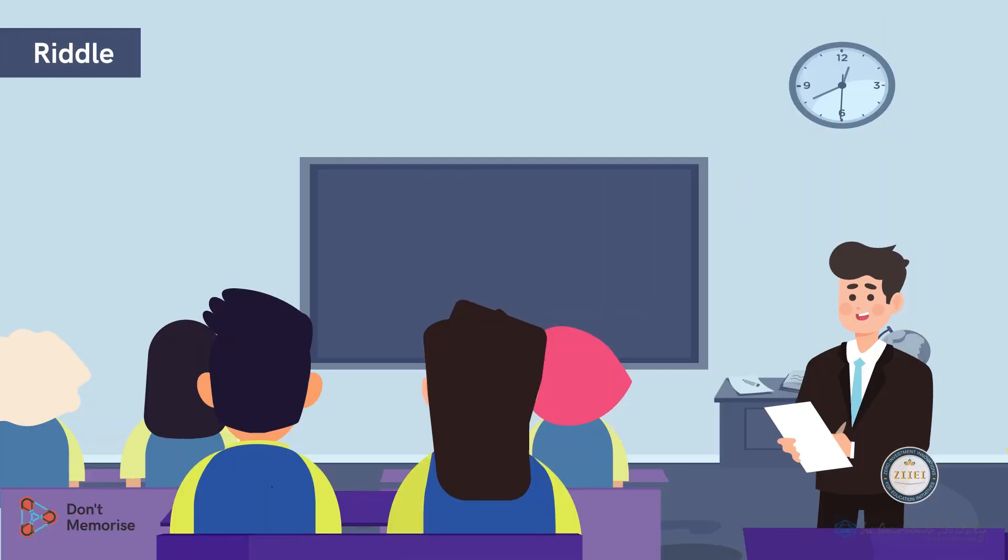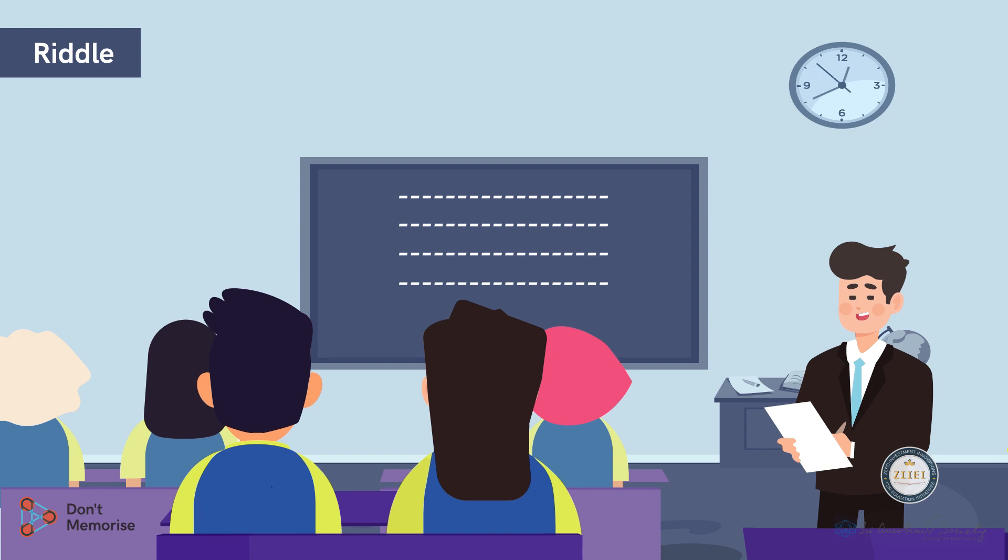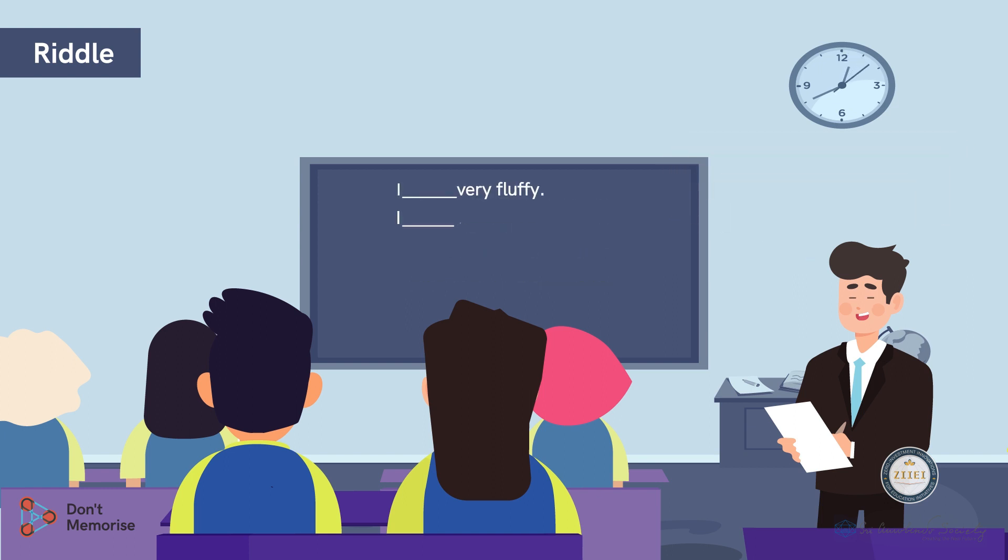To make it even more interesting, we shall be conducting it in the form of a riddle. Write a few sentences on the board. Inform the students that they will then need to complete the sentences using 'am' or 'have.' After the sentences are complete, they will have to guess the name of our friend.